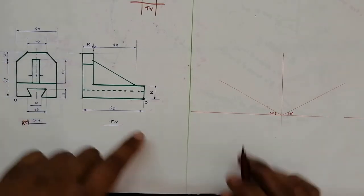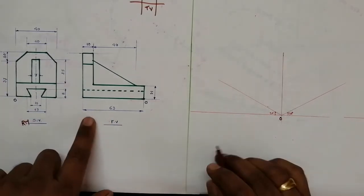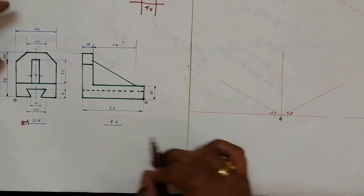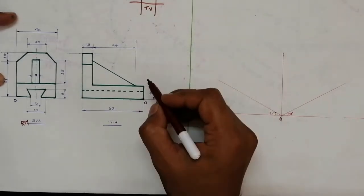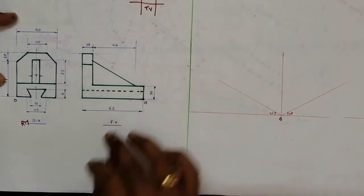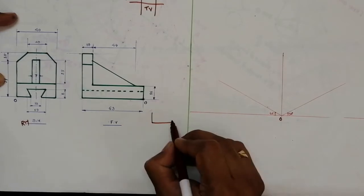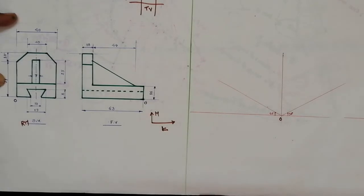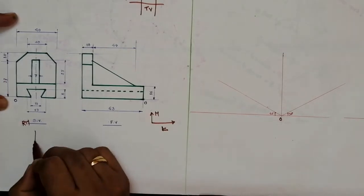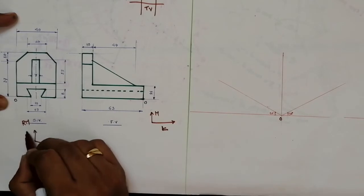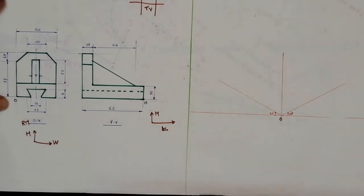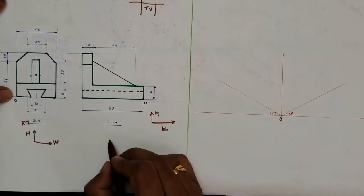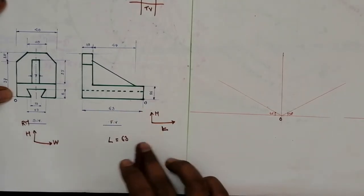Accordingly we have to place the dimensions in our isometric view. The first step to draw the problem of isometric projection is to find out the length, width, and height. Since this is the front view, the horizontal dimension denotes length and the vertical dimension denotes height. Length is equal to 63 mm.